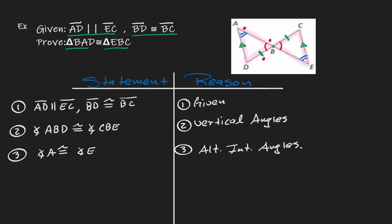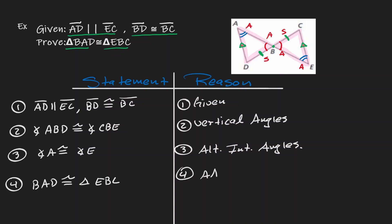We have two congruent angles followed by a congruent side — that's angle, angle, side. On the triangle on the left we have angle, angle, side, and on the triangle on the right we also have angle, angle, side, so we're done. We can say that triangle BAD is congruent to triangle EBC, and the reason is the angle-angle-side congruency theorem.